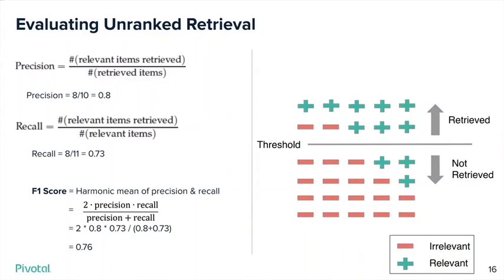The F1 score — the formula is shown here — combines precision and recall using what's called a harmonic mean rather than a straight regular mean, just to show you that you can combine the two.